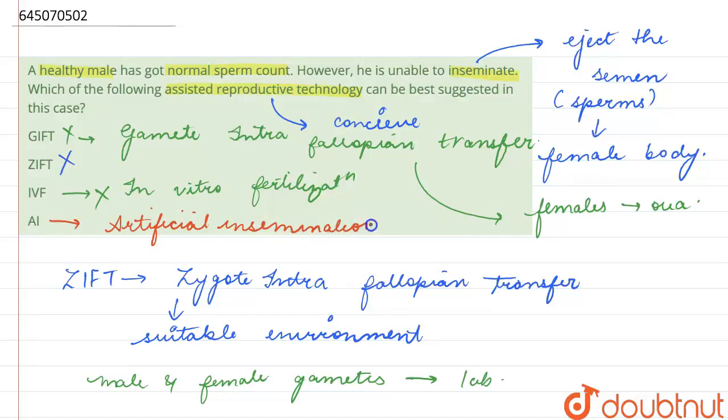Then fourth option is artificial insemination. All right, in this process the semen is collected from the male and is injected into the vagina or uterus of the female to initiate fertilization. So this is the process that will be used here because the male is healthy and has normal sperm count but he's unable to inseminate. Therefore, the process for fertilization will be through artificial insemination.